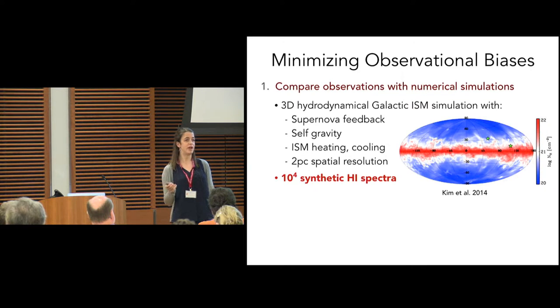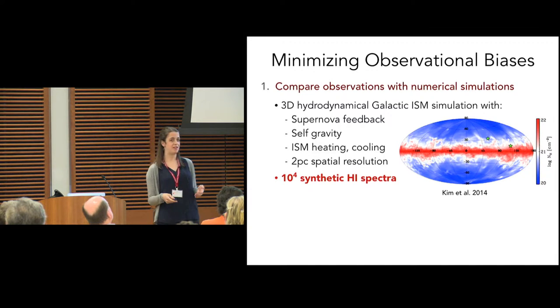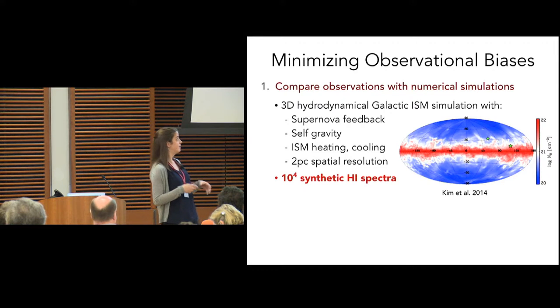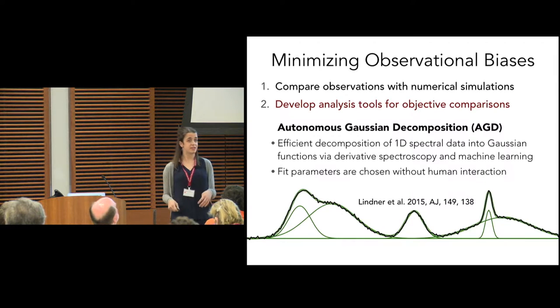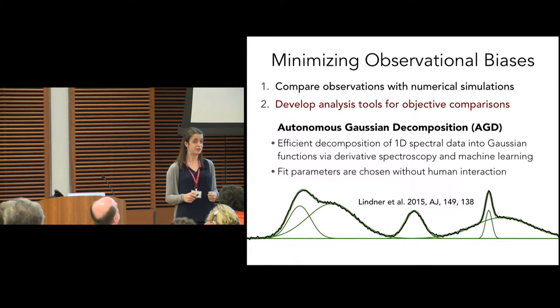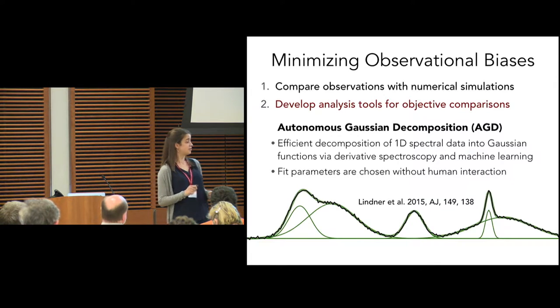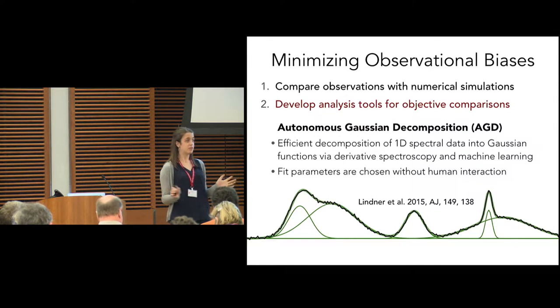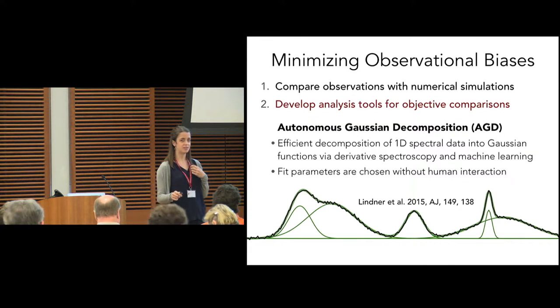We needed to develop a new method for analyzing this data in an efficient and objective way. Last year, our group developed a new method called Autonomous Gaussian Decomposition, which is an efficient method for decomposing 1D spectral line data into Gaussian functions. The great thing about AGD is that it takes advantage of machine learning and derivative spectroscopy to provide fit parameters without human interaction. There is no subjective input into this decomposition. It's completely machine learning based, which is the artificial intelligence aspect of my title.